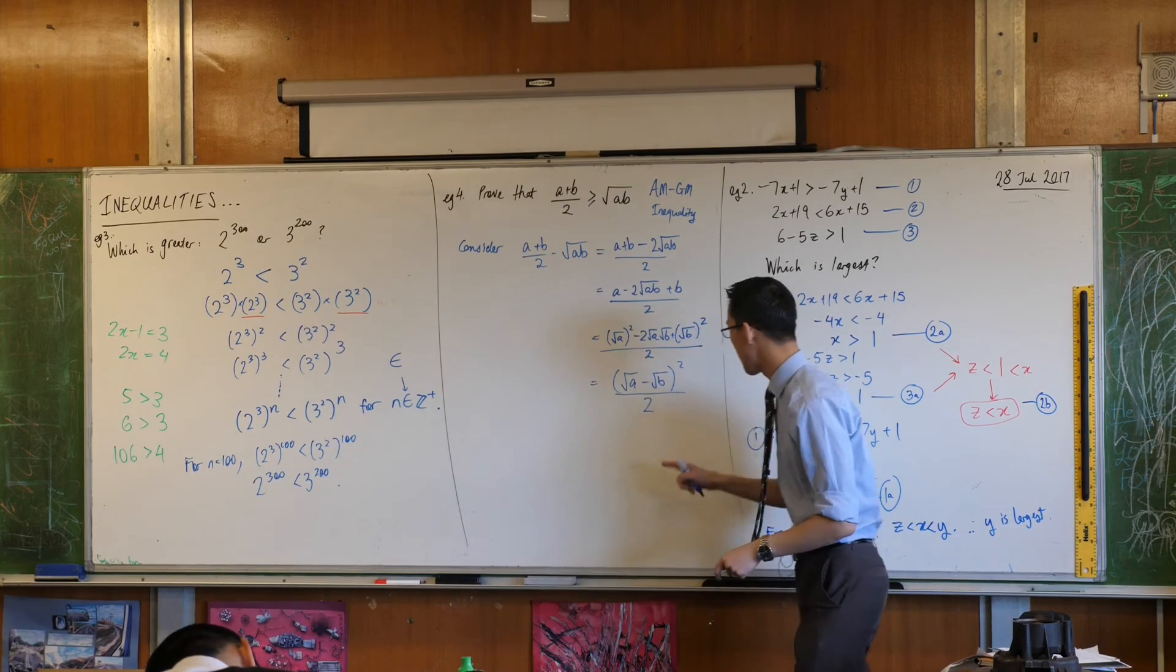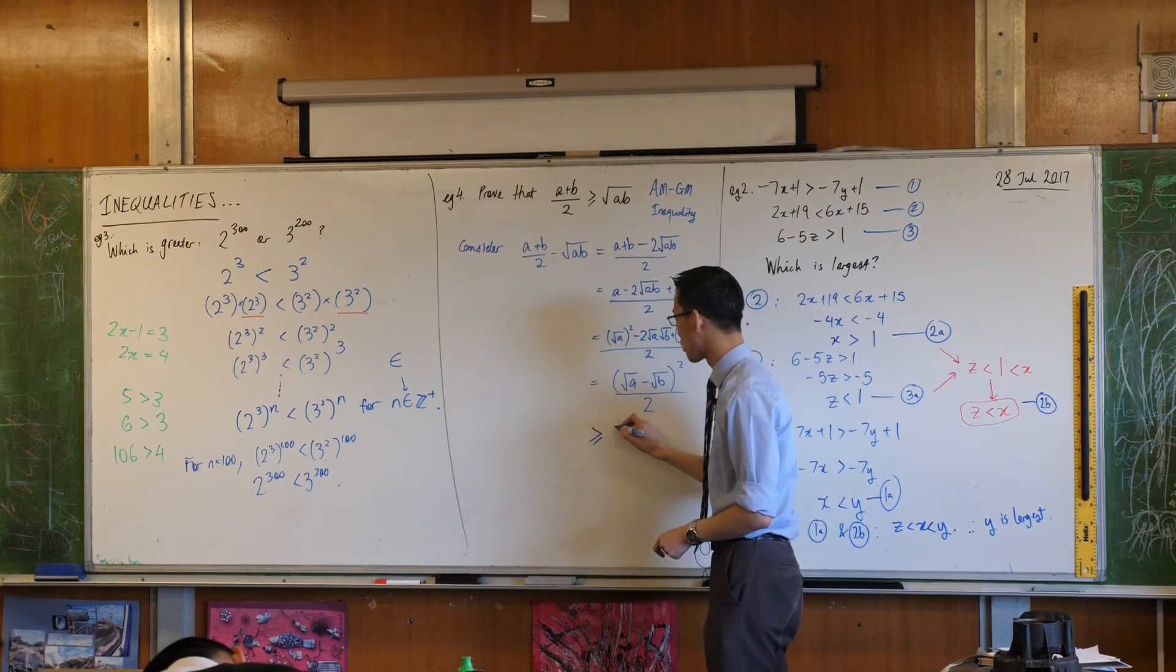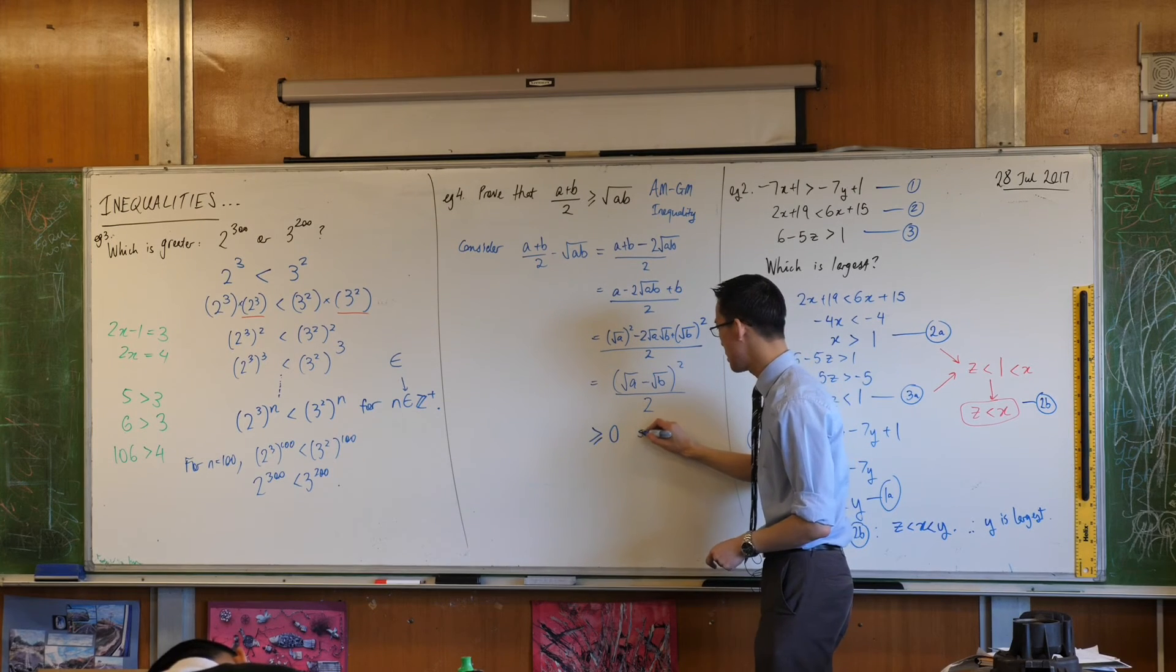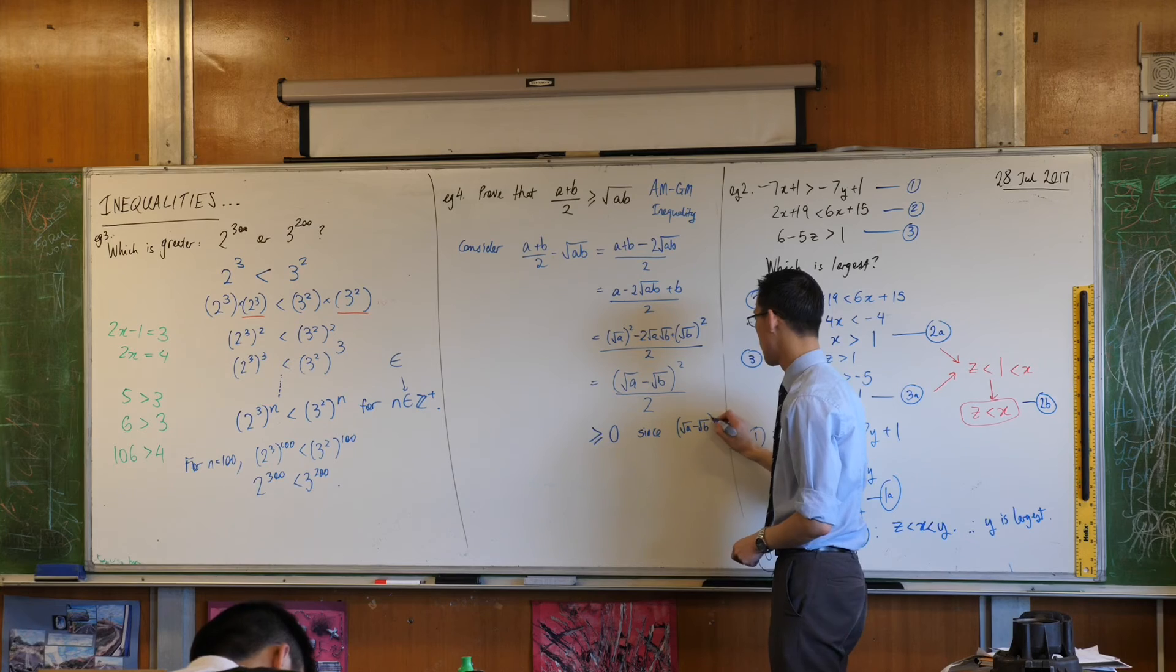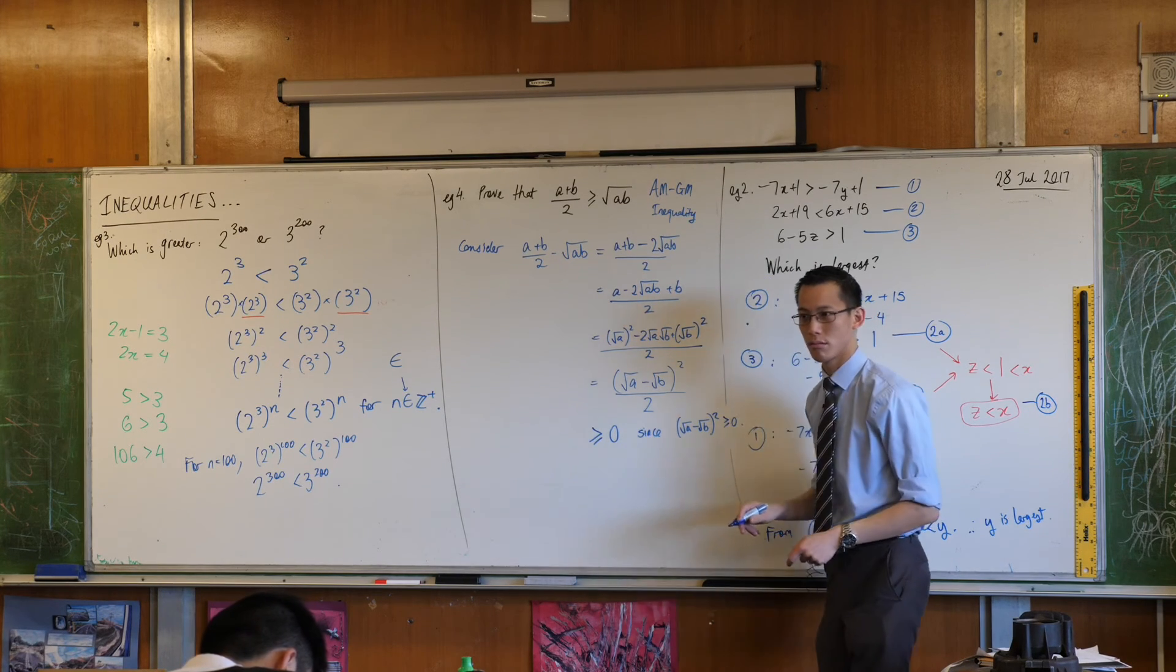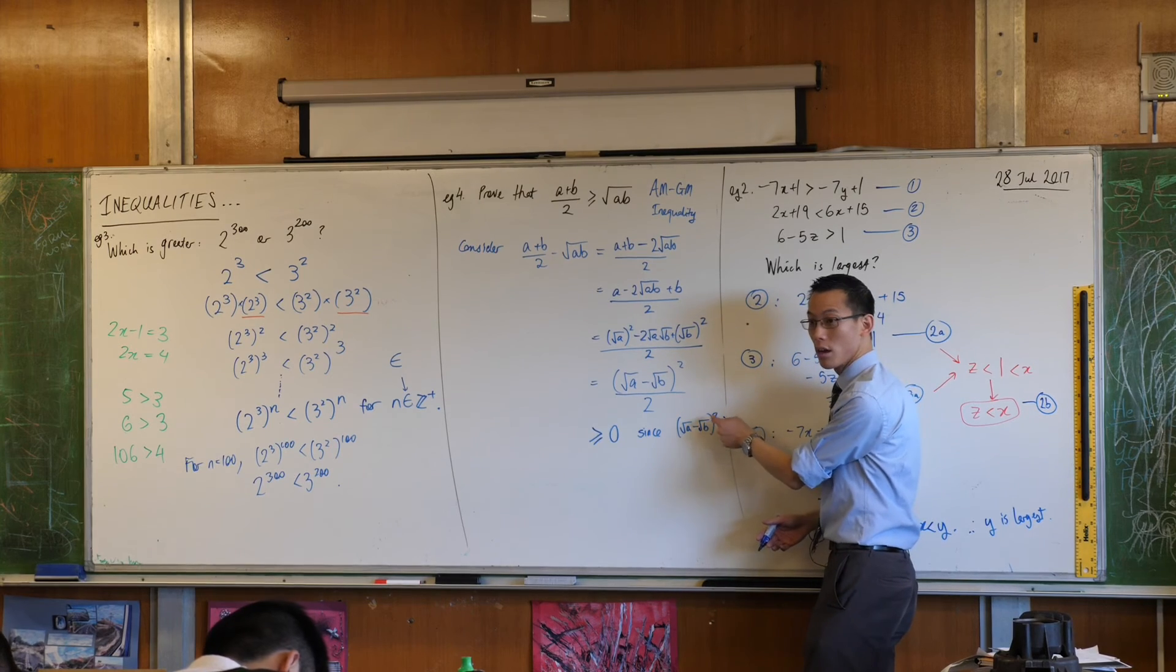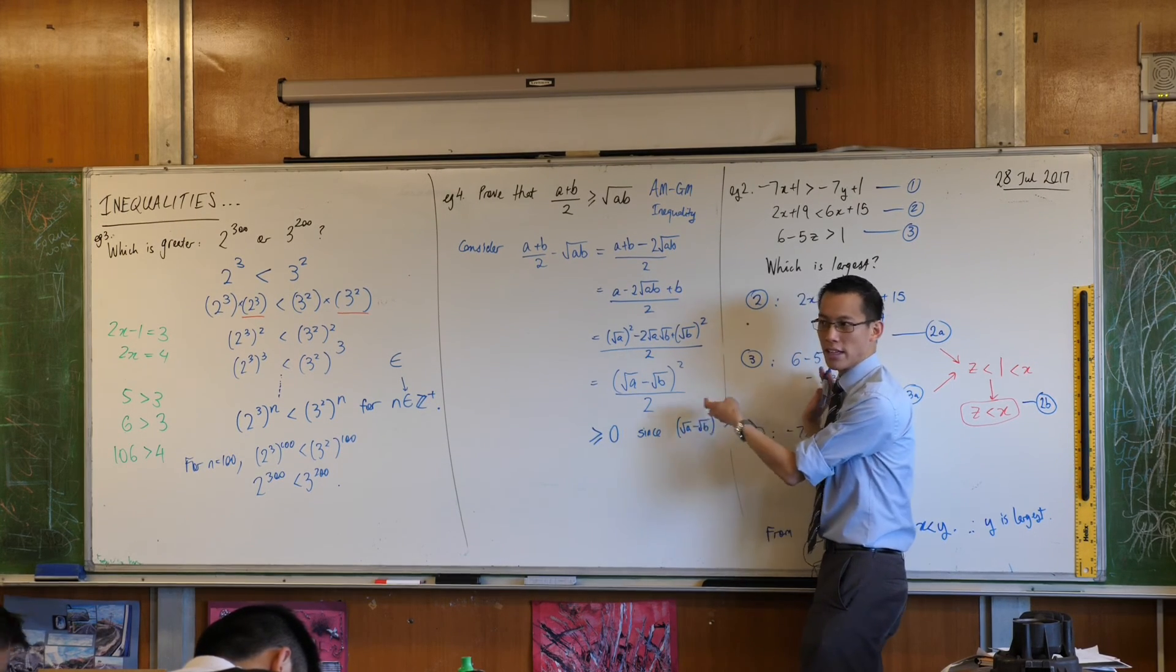So therefore I can say, this thing here is greater than or equal to zero, since this guy here, that has to be greater than or equal to zero. Does that make sense? It's a square, right? So the smallest it could possibly be is zero, but it's very likely larger than that.